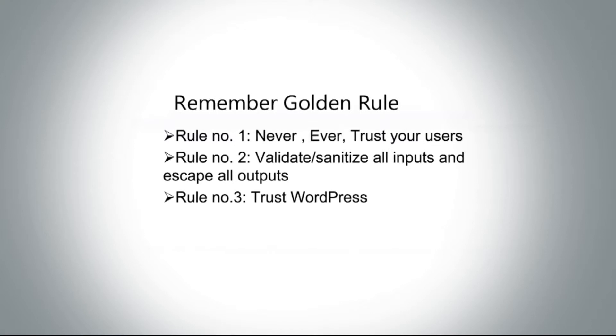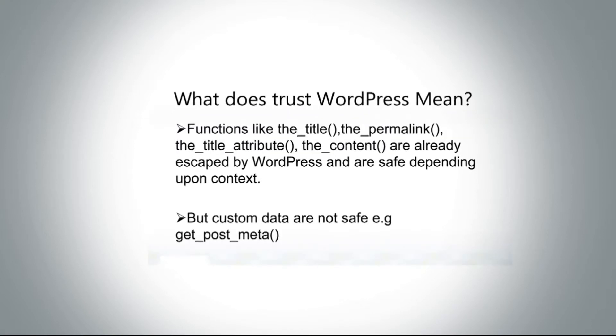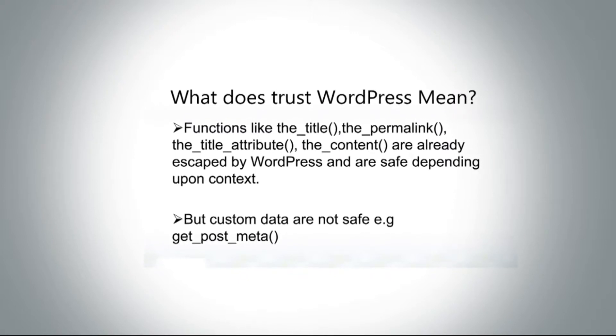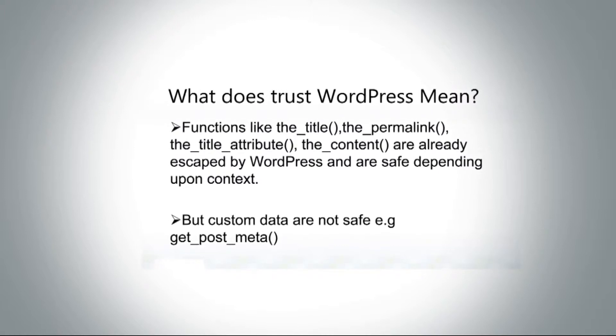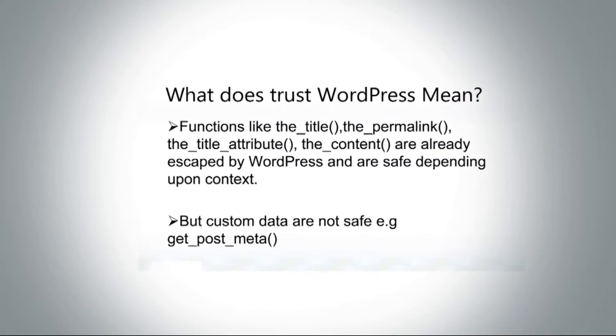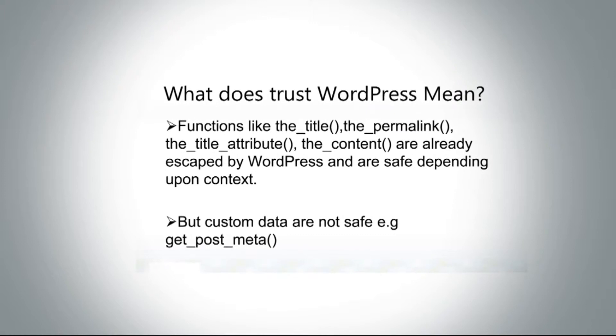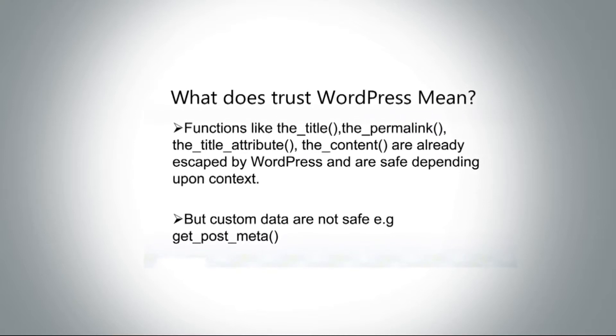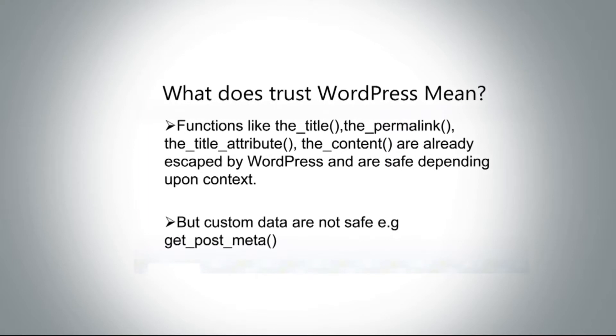Rule three: trust WordPress. WordPress has lots of functions built into its core that you can use securely — you don't need to re-validate or re-sanitize them. Functions like `the_title()`, `the_permalink()`, `the_content()` are already validated in the core, so you don't have to think twice about them. However, if you are taking data from custom meta boxes you have created — for example, using `get_post_meta()` — then you should validate it yourself using the functions WordPress has provided. This all depends on practice — how you code is how you become more expert.